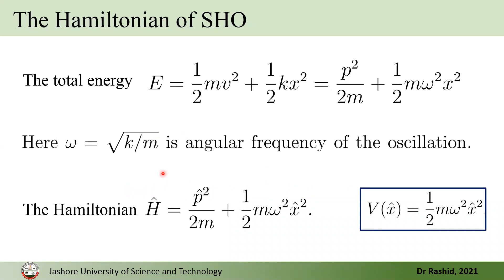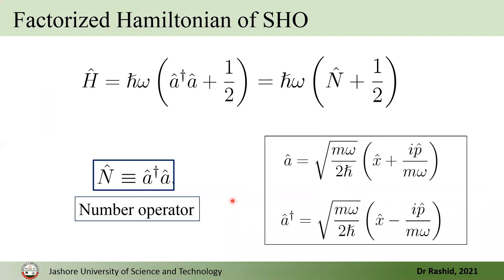We started with the Hamiltonian. Here, this is the kinetic energy term and this is the potential energy term. We factorized it and wrote it this way. Here, A-dagger is called the rising operator, A is the lowering operator, and N-hat is the number operator.